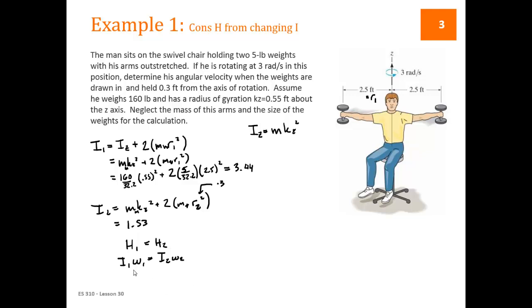So as expected, the moment of inertia for the man when he's pulled the weights in towards his chest is much smaller than the moment of inertia when they're outstretched. So now our conservation of momentum says that H1 is equal to H2. H for this case, he's rotating around a fixed axis Z, is going to just be I1 times omega1 equals I2 times omega2. I1, or omega1 is given as 3 radians per second, so we get 3.44 times 3 equals 1.53 times omega2. So omega2 equals 6.745 radians per second.